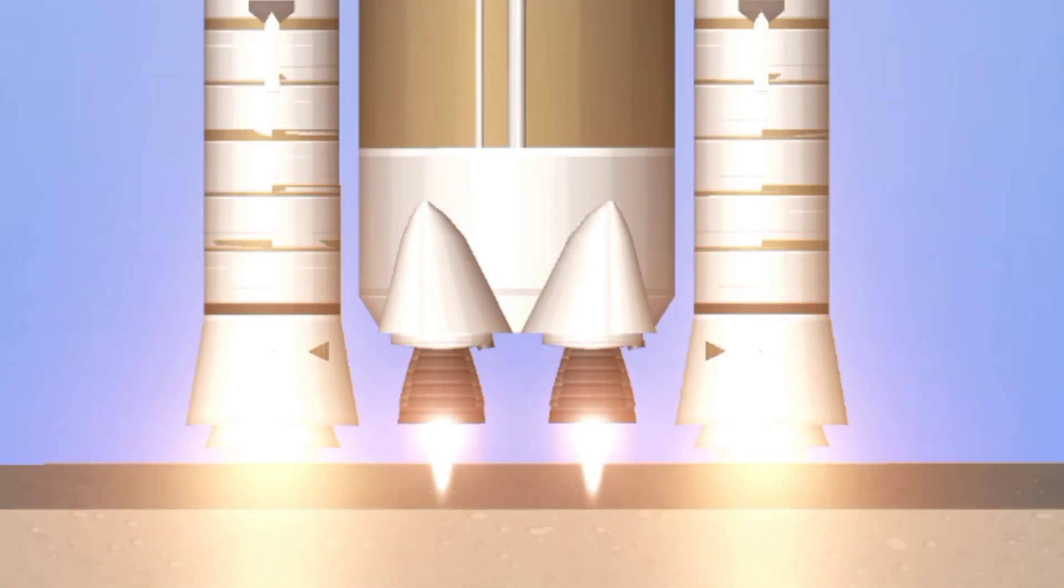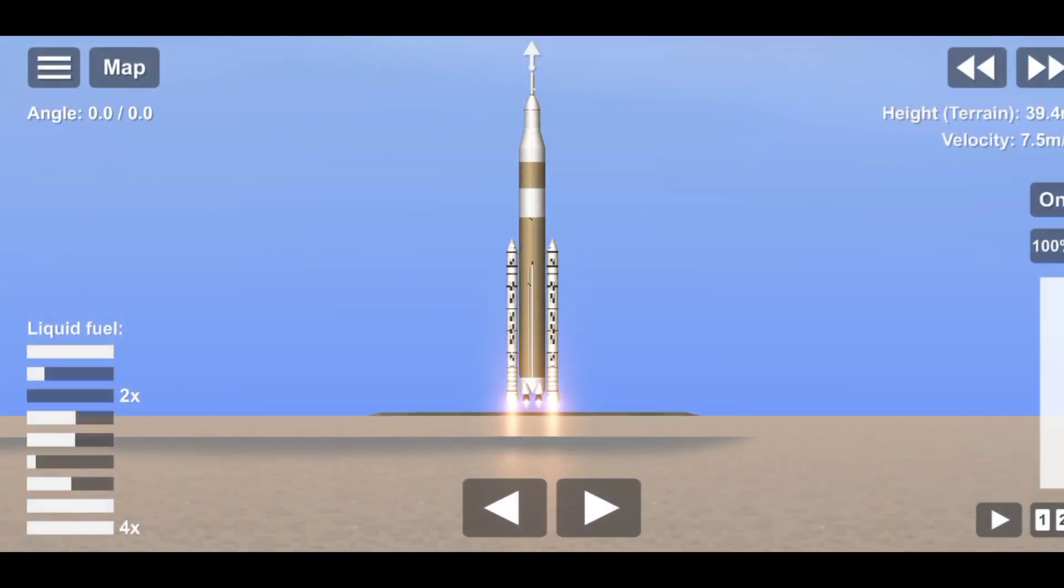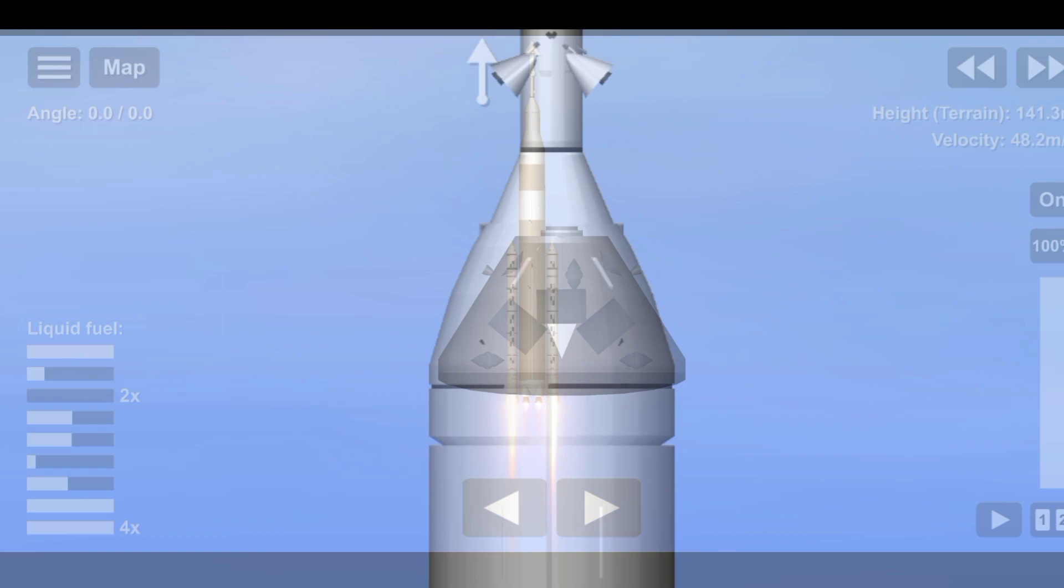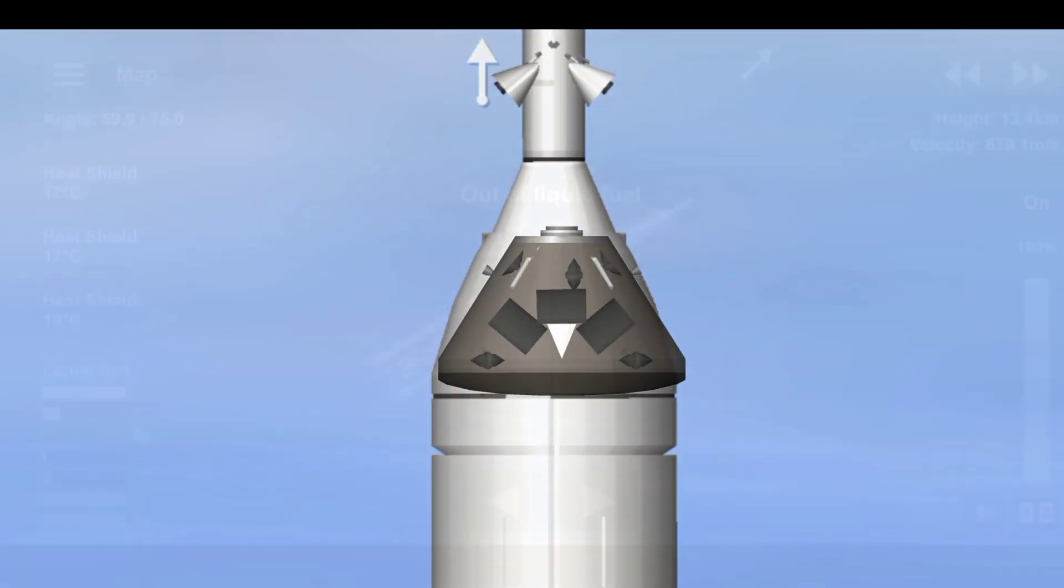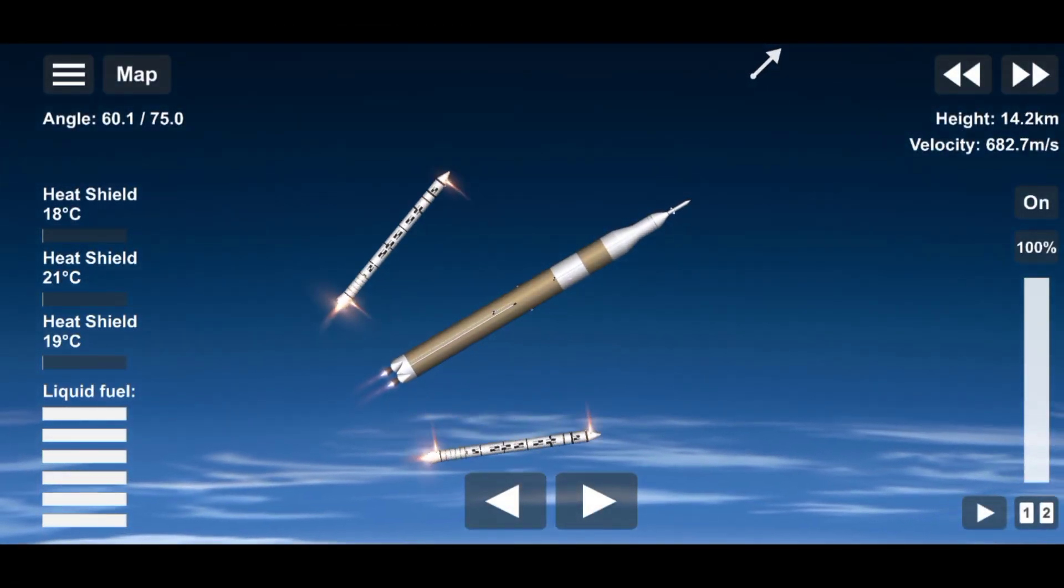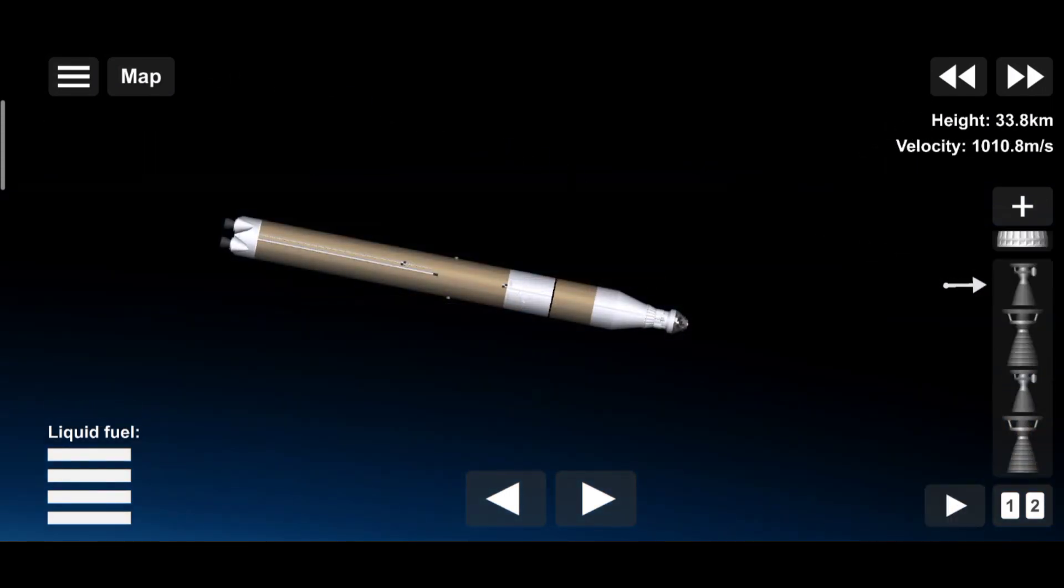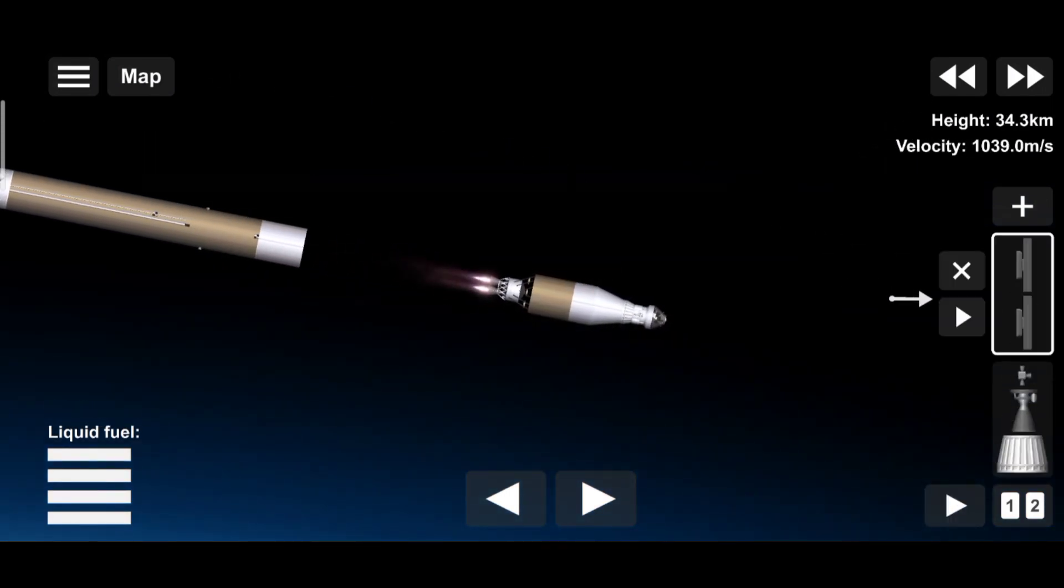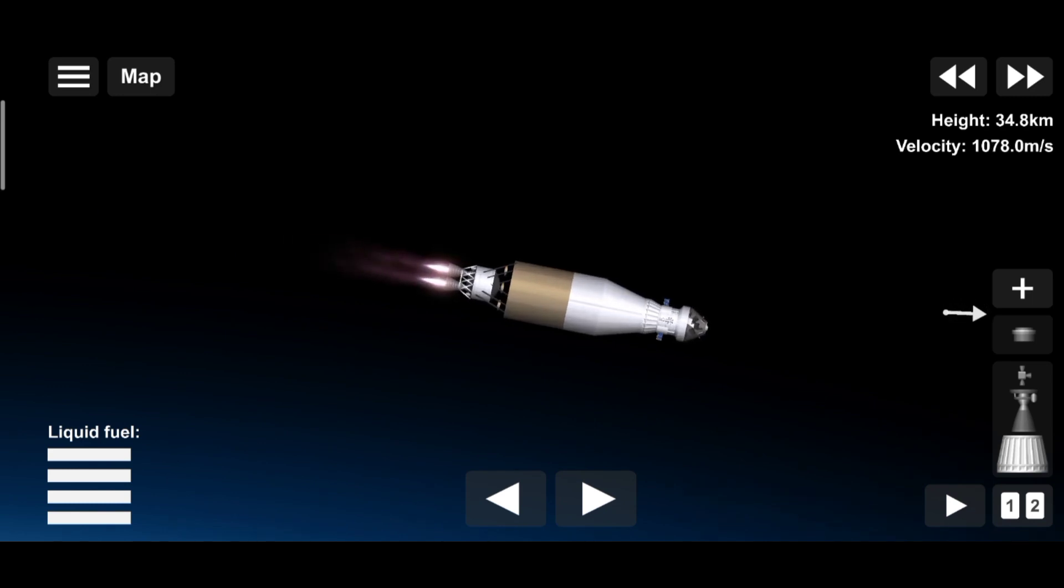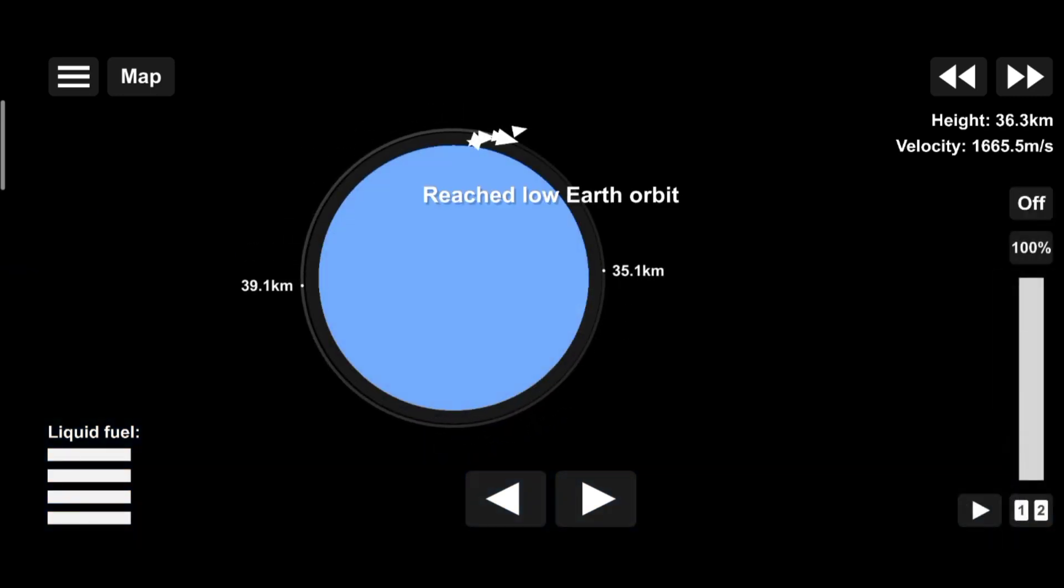Once ignited, there is no stopping what comes next. All four RS-25 engines and the two solid rocket boosters come to life, thundering our crew upwards. Two minutes after ignition, the solid rocket boosters are spent and released. Eight minutes after launch, the core stage is depleted and separated. The upper stage fires briefly, placing Orion into a parking orbit around the Earth.